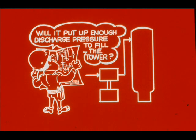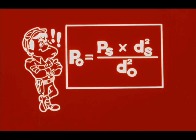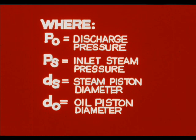In some cases, your concern may be whether the pump will put up enough discharge pressure. You can calculate the discharge pressure by the formula: P sub O equals P sub S times D sub S squared over D sub O squared. Where P sub O equals discharge pressure, P sub S equals inlet steam pressure, D sub S equals the steam piston diameter, and D sub O equals the oil piston diameter.